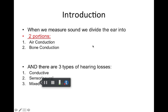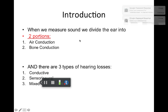When we measure sound, we divide the ear into two portions: air conduction and bone conduction. We test through the air conduction pathway using headphones or insert earphones, and we test the bone conduction pathway using an oscillator or vibrator placed on the mastoid bone. By testing two ways, we can parse out the three types of hearing loss: conductive hearing loss, sensorineural hearing loss, and mixed hearing loss, which is a combination of the two.